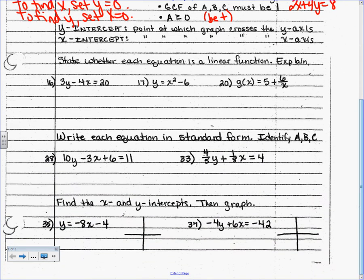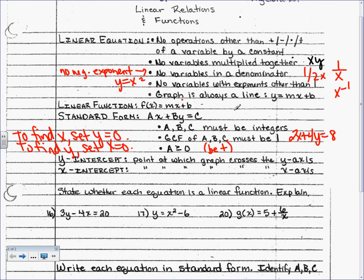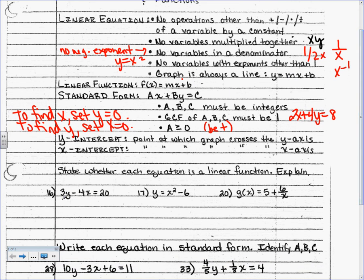State whether each equation is a linear function. For 3y − 4x = 20: do we have any operations other than addition, subtraction, multiplication, or division? No. Any variables multiplied together? No. Any letters in the denominator? No — we don't even have a denominator. Any variables with an exponent other than 1? No, those are both understood 1s. Could we put it in slope-intercept form? Yes. So this equation is a linear function.